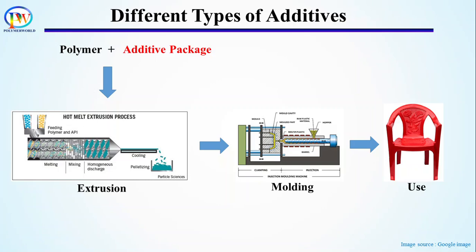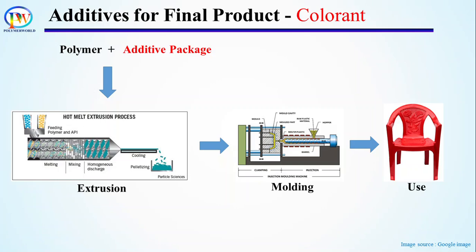First, let's discuss additives used to achieve desired performance in the product. The first thing we see in a product is its color. Colorants are one type of additive added to achieve desired color, and they can be in the form of dye or pigment. Dyes are organic chemicals which can absorb light, and pigments are particles which can also absorb light of different colors. Dyes are used for bright color that fades with time, while pigments are used for long-lasting color. Depending upon the use and need, either dyes or pigments are used as colorants.